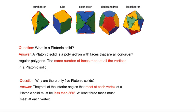Now, there are only five Platonic solids. Why is that? The total number of interior angles that meet at each vertex of a Platonic solid must be less than 360 degrees. And at least three faces must meet each vertex. So at least three, and they have to be less than 360. So let's explore all of these.